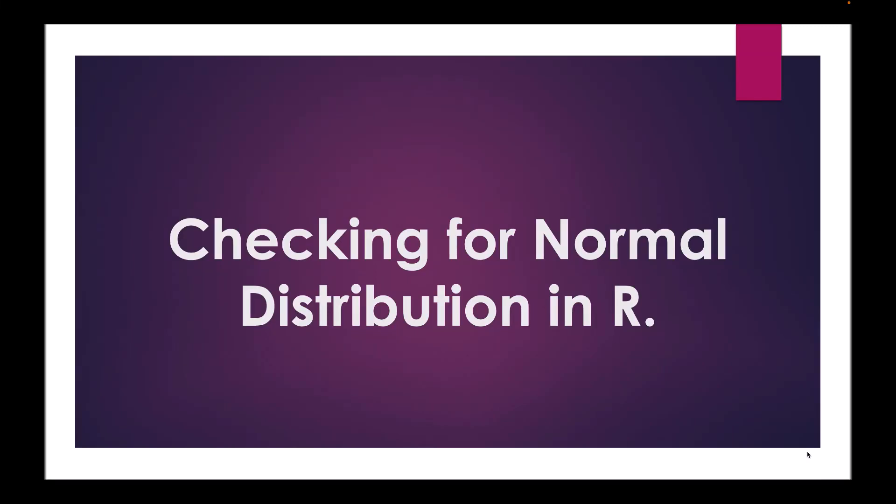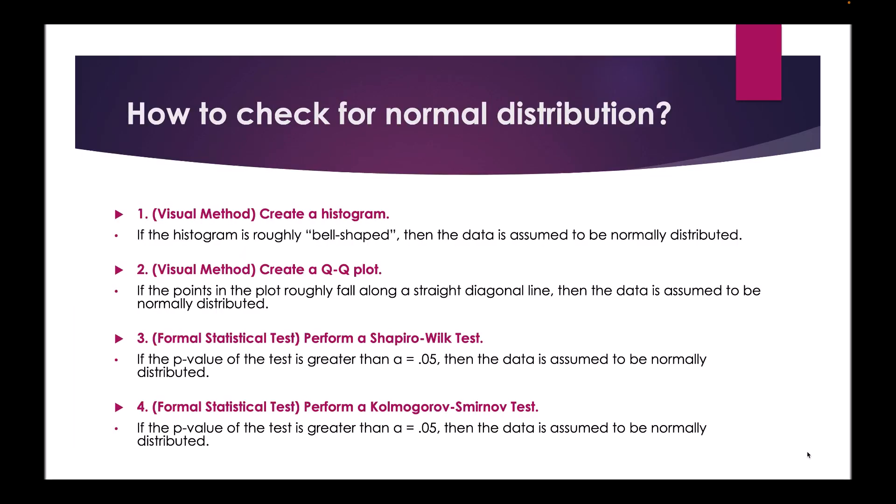This tutorial is going to demonstrate some of the ways you can check for normal distribution in R. To know what statistical analysis would be best for our data, it's good to see whether it is normally distributed or not. That way we would know whether we need to do a parametric test for normally distributed data like a t-test, or a non-parametric test for not normally distributed data like a Mann-Whitney-U test.